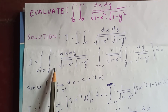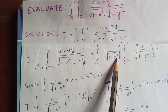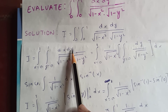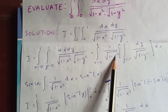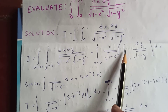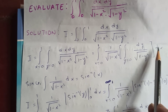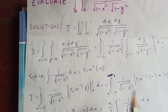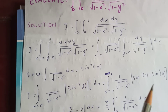Now let's integrate for y first. We have the integral from x equal to 0 to 1 of 1 over square root of 1 minus x squared — this comes out because when dealing with dy, x is just like a constant. So it comes out before the integral, and we are left with the integral from y equal to 0 to 1 of dy by square root of 1 minus y squared, times dx.